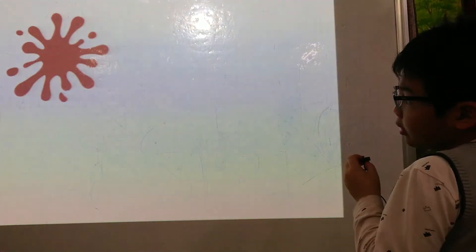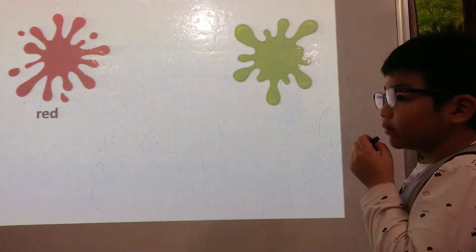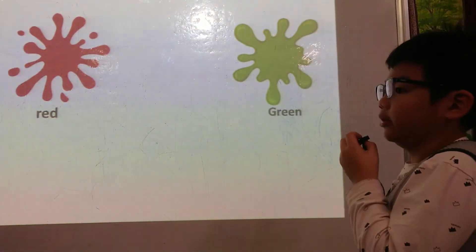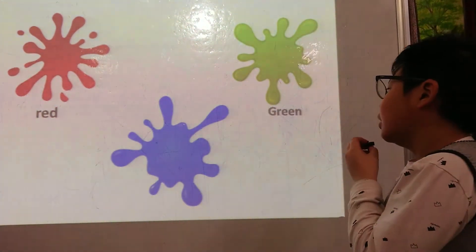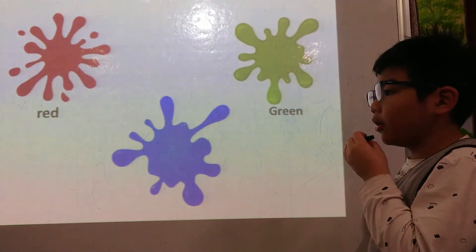Is red a primary color? Yes, it is. Is green a primary color? Yes, it is. Is blue a primary color? Yes, it is. Is yellow a primary color? No, it isn't.